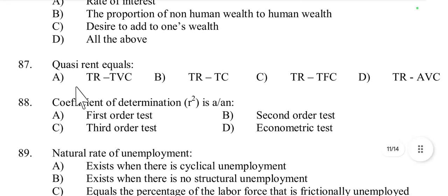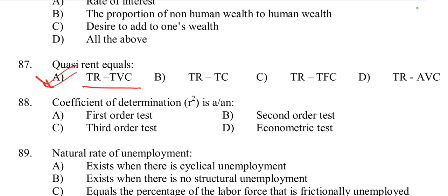Question number 87: Quasi-rent equals total revenue minus total variable cost. It represents the income earned by a factor of production over and above its opportunity cost, assuming the factor is fixed in supply. So quasi-rent equals TR minus TVC.